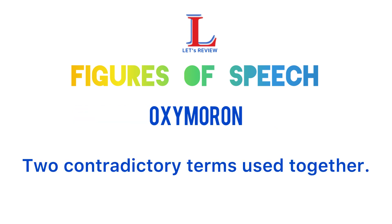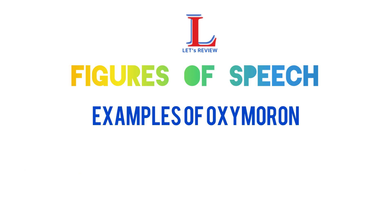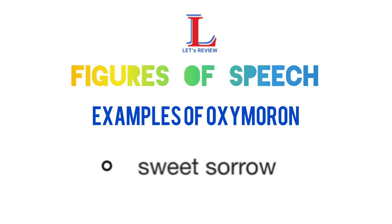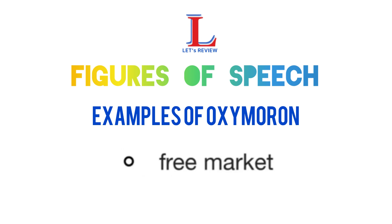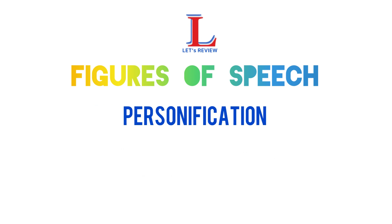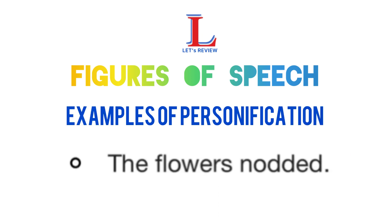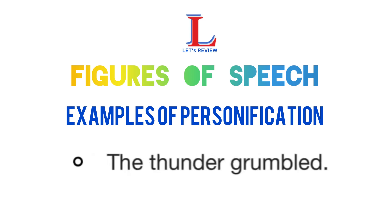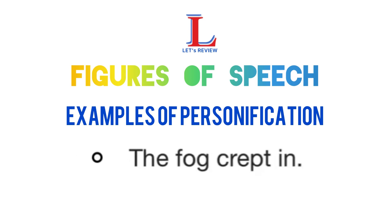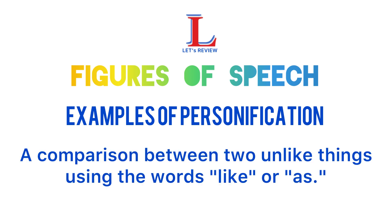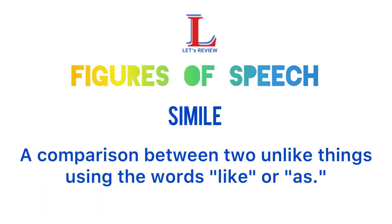An oxymoron is two contradictory terms used together. Some examples include: peace force, kosher ham, jumbo shrimp, sweet sorrow, free market. Personification gives human qualities to non-living things or ideas.